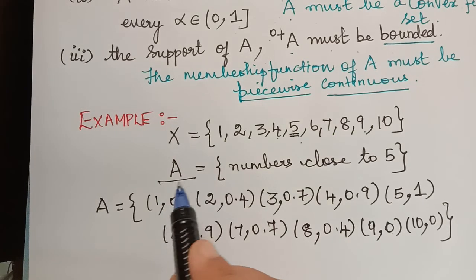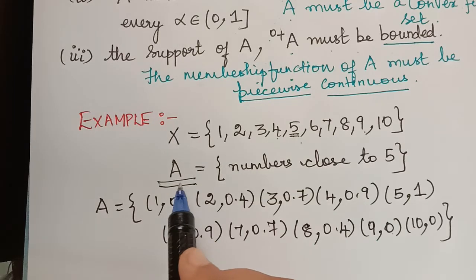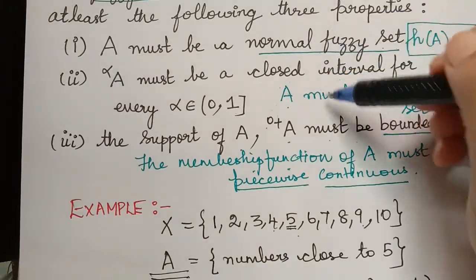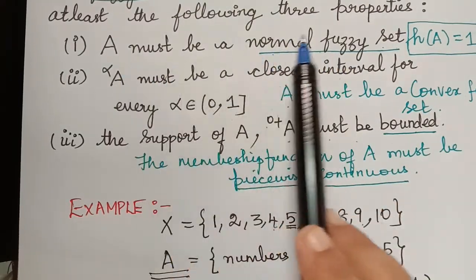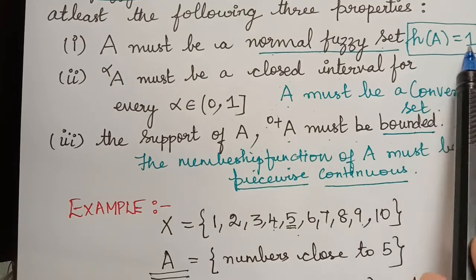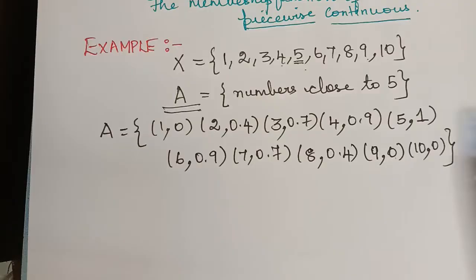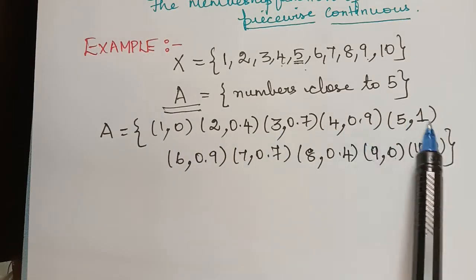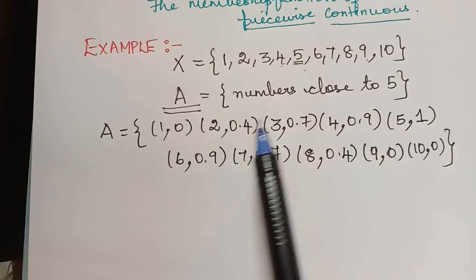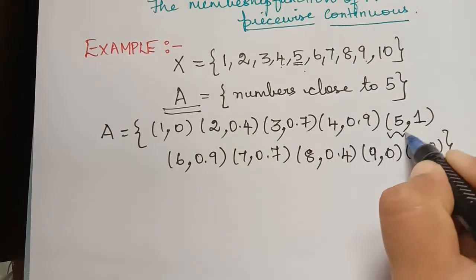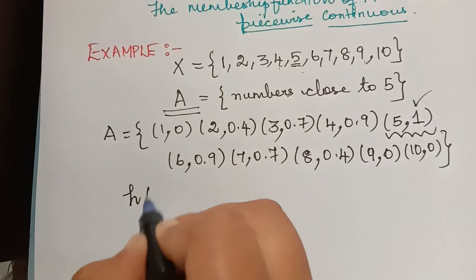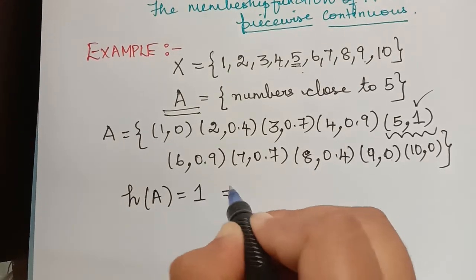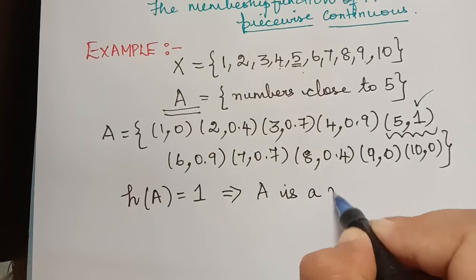Now let me check whether the fuzzy set we have considered is a fuzzy number or not. For this fuzzy set to be a fuzzy number it has to satisfy all three conditions. Let me check the first condition: A must be a normal fuzzy set, meaning the height of that fuzzy set must be equal to 1. We observe that the maximum membership grade is 1, for element 5, so the height of A equals 1, which implies A is a normal fuzzy set. The first condition is satisfied.